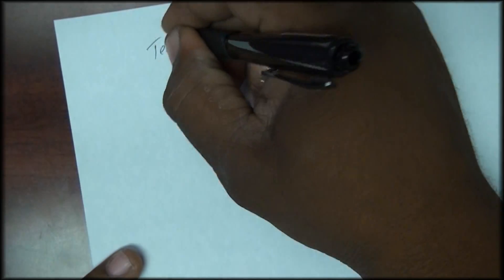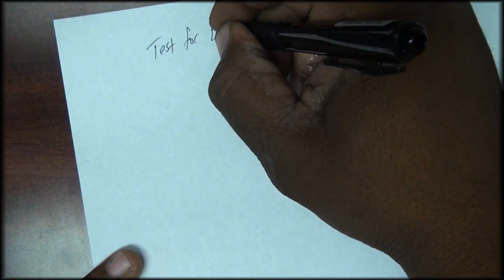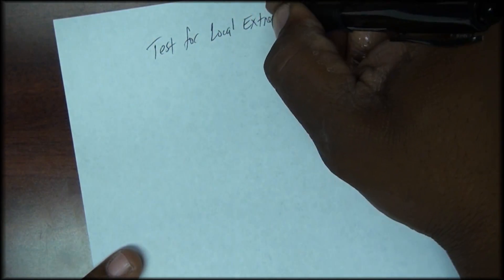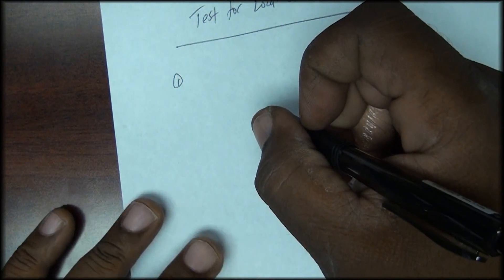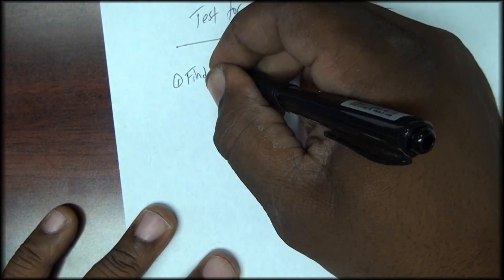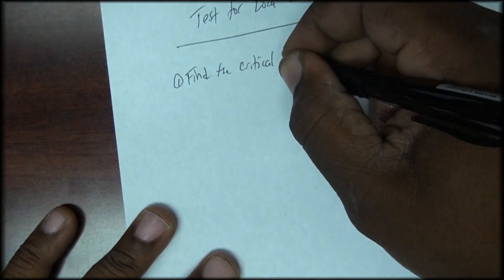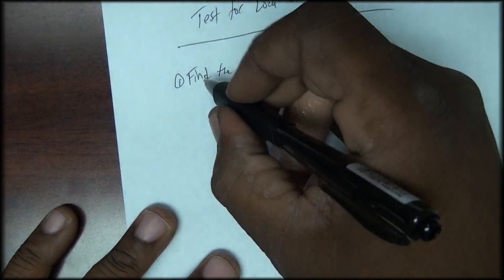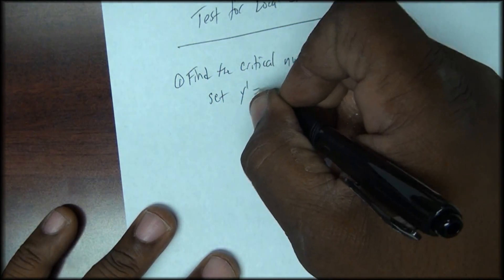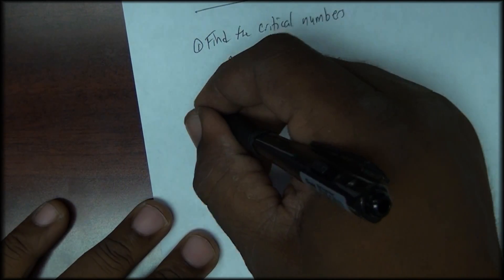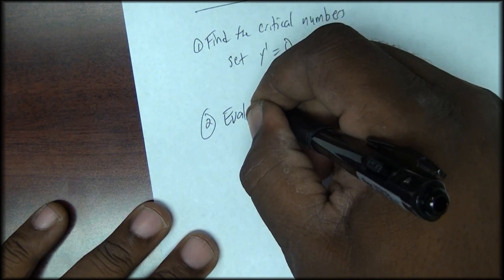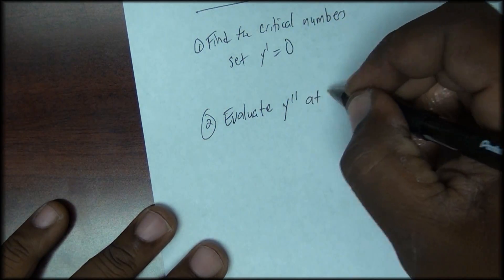Next, we'll test for minimum and maximum. The steps are: first, find the critical numbers by setting the first derivative equal to zero; second, evaluate the second derivative at the critical points.